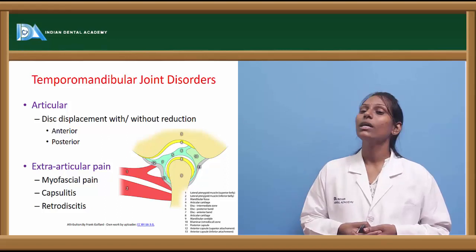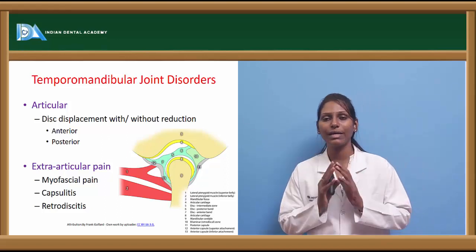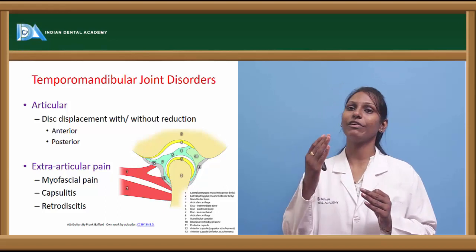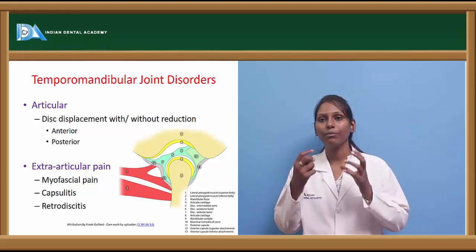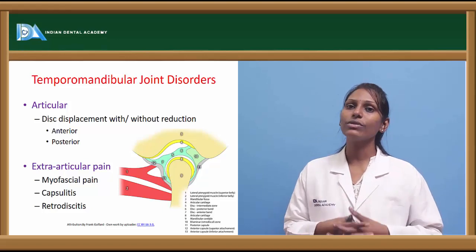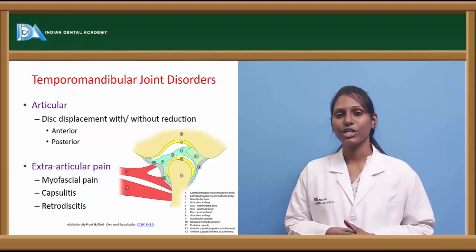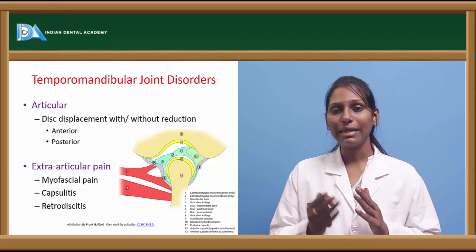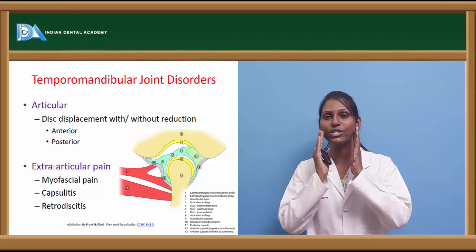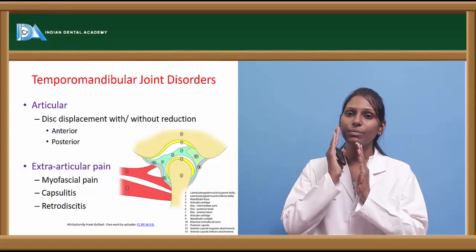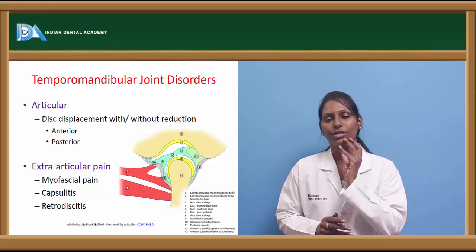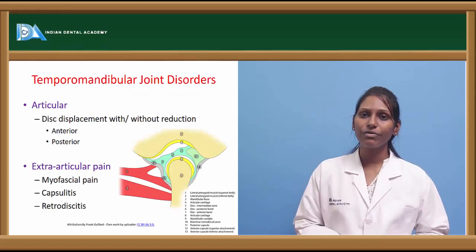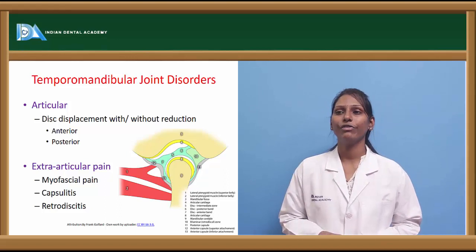Extra-articular pain includes myofascial pain, capsulitis, and retrodiscitis. Myofascial pain occurs due to overuse or occlusal discrepancy causing tenderness in the muscles of mastication — masseter, temporalis, and medial and lateral pterygoids. Temporalis pain refers to the temple region; masseter and pterygoid pain refers over the TMJ, preauricular, and cheek regions. Capsulitis is inflammation of the TMJ capsule and can also lead to facial pain.